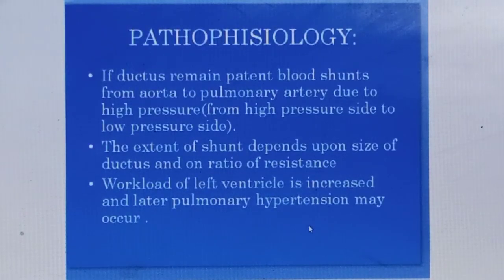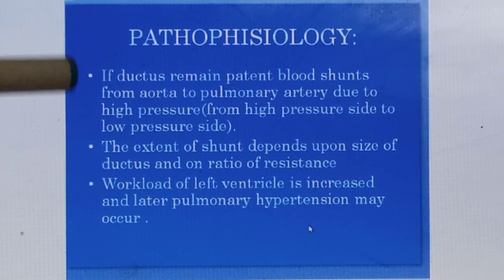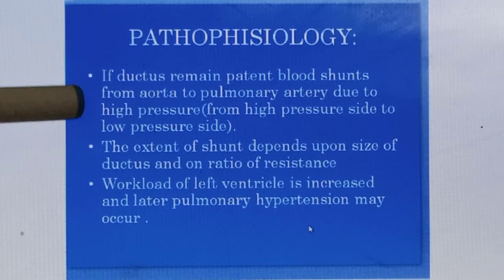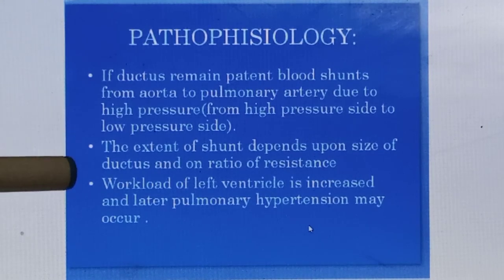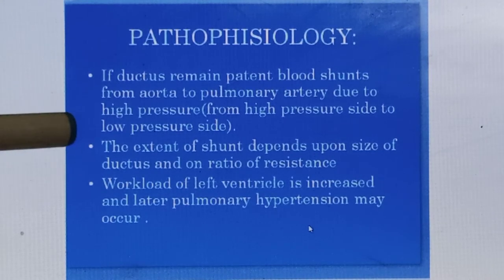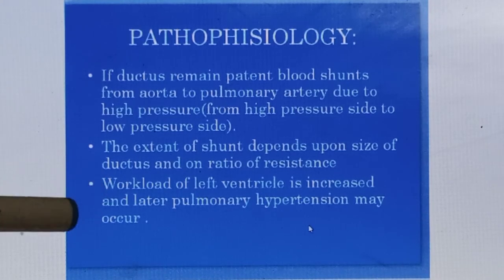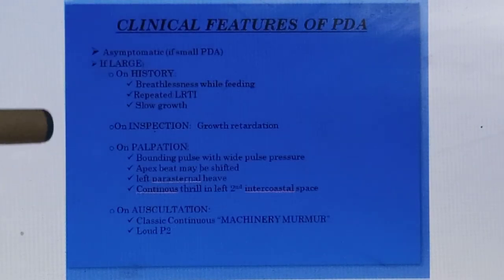Remember, it is a cyanotic heart disease. In the pathophysiology: if the ductus remains patent, blood shunts from the aorta into the pulmonary artery — that is, from a high pressure area to a low pressure area. The extent of the shunt depends upon the size of the ductus and on the ratio of resistance. The workload on the left ventricle is increased and later pulmonary hypertension may occur, which leads to heart failure.